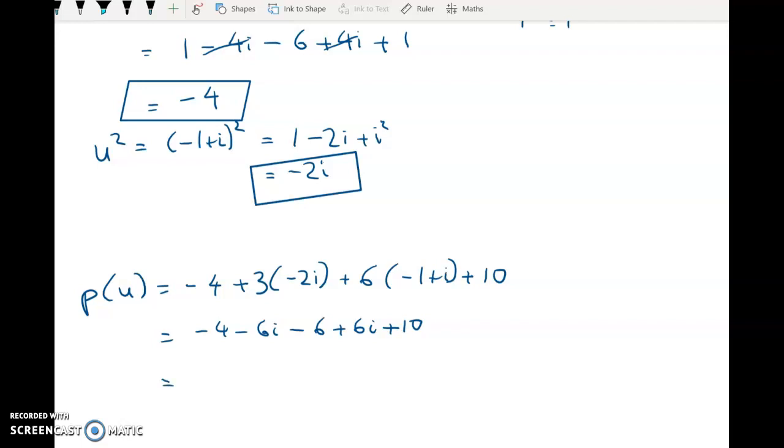Right negative 4 minus 6i minus 6 plus 6i plus 10. Right show every line of working you are doing a show that question so it's negative 10, fine to say that they go at that point and we've shown that it equals 0 therefore u is a root by the factor theorem.